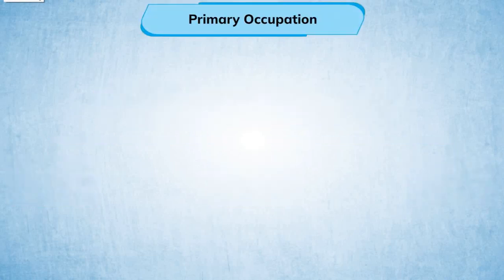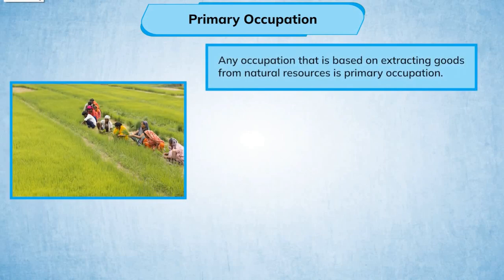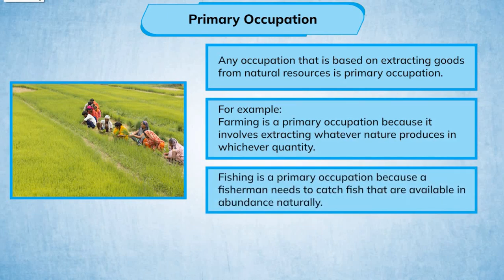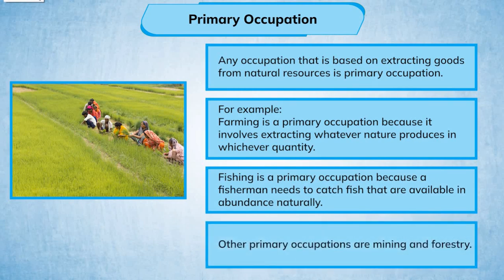Primary occupation: Any occupation that is based on extracting goods from natural resources is a primary occupation. For example, farming is a primary occupation because it involves extracting whatever nature produces. Fishing is a primary occupation because a fisherman needs to catch fish that are available in abundance naturally. Other primary occupations are mining and forestry.